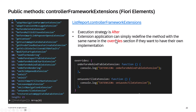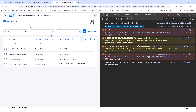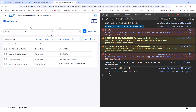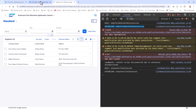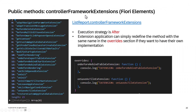If you want to redefine the method, simply place it in the override section in your extension application, and it will run after the base. The same applies to onSaveStyleExtension — clicking it shows the base runs first, then the extension. These controller framework extensions all use the execution strategy 'after'. To extend them, simply put the method inside the overrides section.